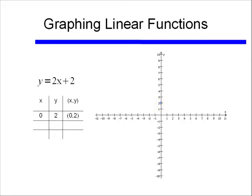Let's do another point — let's do x equals 1. Then y equals 2 times 1 plus 2, so y is equal to 4, leading to the point (1, 4). Finally, if x equals negative 1, y equals negative 2 plus 2, or 0. I can graph that point, connect the line, and I have graphed my linear function.